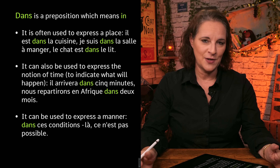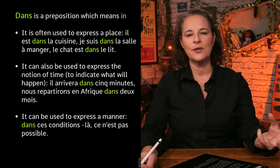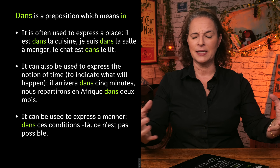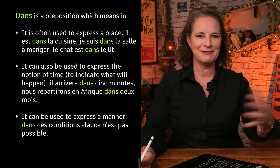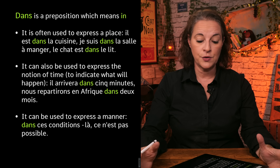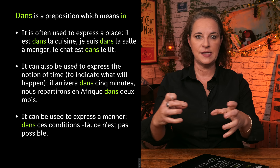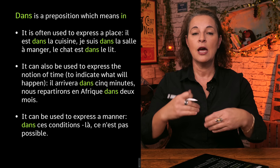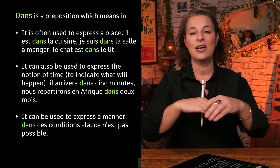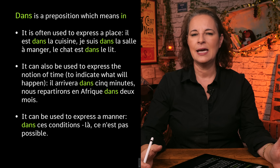Let's have a look at dans. Dans is a preposition — we know that — and it means 'in'. Picture dans as being a more concrete preposition than en. So dans is a preposition which means 'in', and it is often used to express a place. For example, il est dans la cuisine — physically in the kitchen. Je suis dans la salle à manger — I am in the living room. Le chat est dans le lit — the cat is inside the bed. So dans means in, inside.